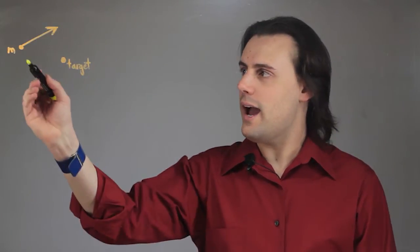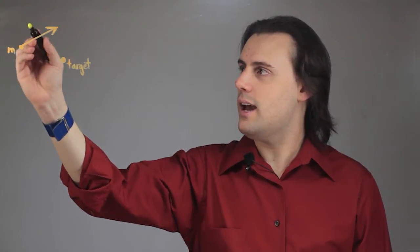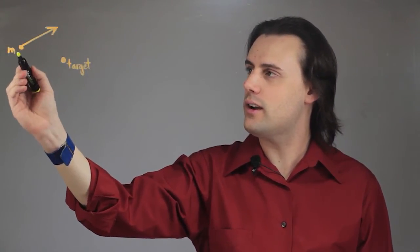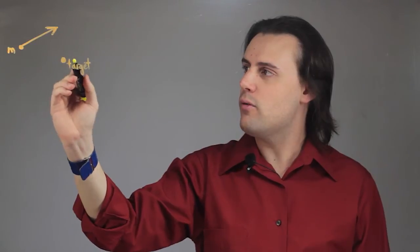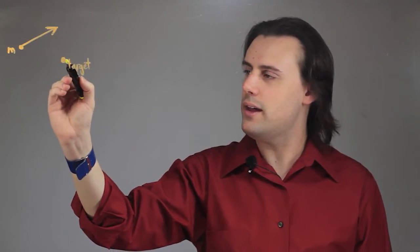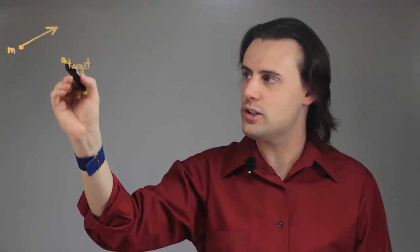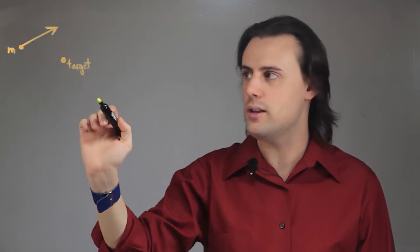Here we have a mass and it has a current trajectory, meaning it's moving with a velocity vector in this direction, but we want the mass to end up at this target destination. Whether we want this mass to collide with some other object or we just want it to pass through this point in space,